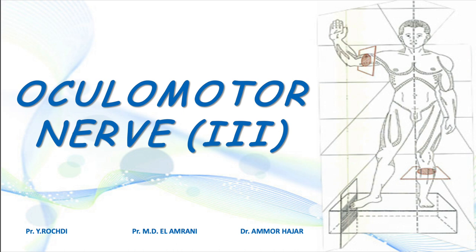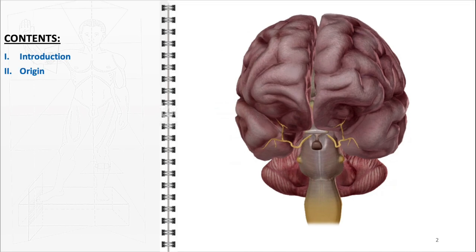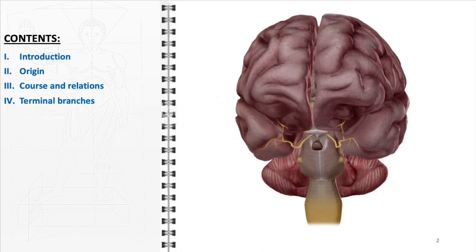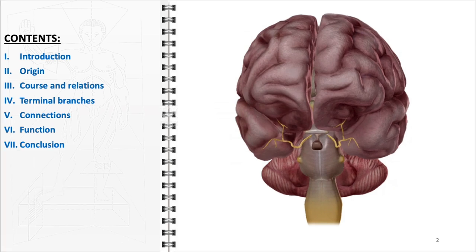In this video, we will explore the intricate anatomy of the oculomotor nerve. We will start with a comprehensive introduction, setting the stage for our detailed exploration. Following this, we'll delve into a thorough description of its origin in the midbrain, tracing its complex course and examining its vital relationships with surrounding cerebral and vascular structures. We'll then meticulously outline its terminal branches, highlighting their specific roles in ocular movement and function. Subsequently, our discussion will extend to the oculomotor nerve's connections with other nerves. Before concluding, we will comprehensively review the diverse functions of the oculomotor nerve.